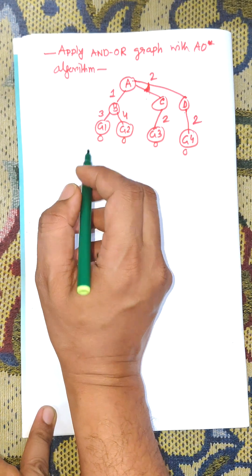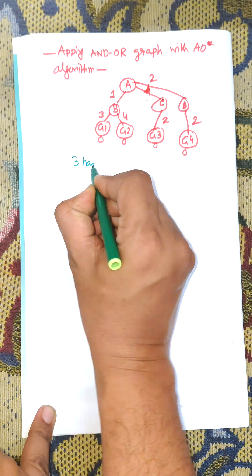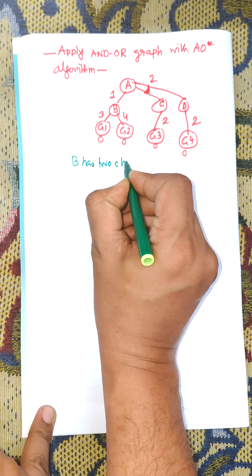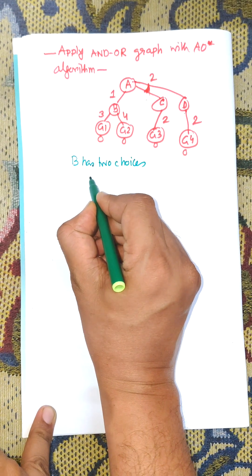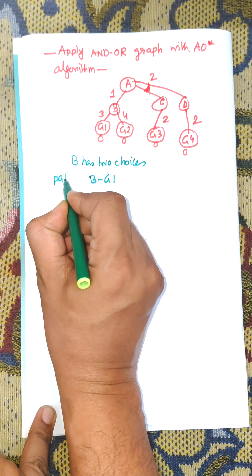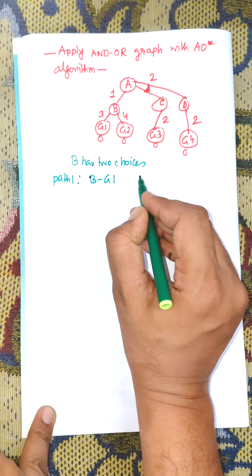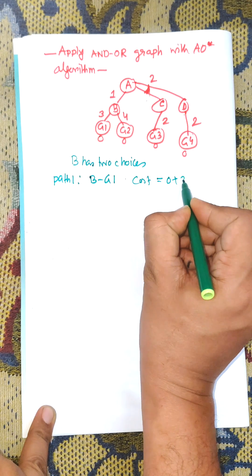First of all, we need to find the path from B. B has two choices. One is cost for B is B to G1. Path 1: B to G1, that is 0 plus 3, cost equal to 0 plus 3 equal to 3.